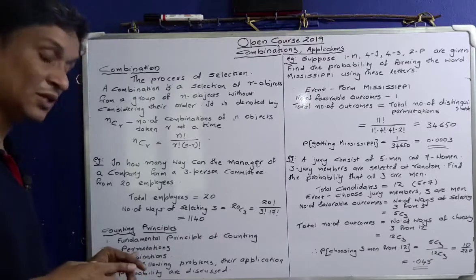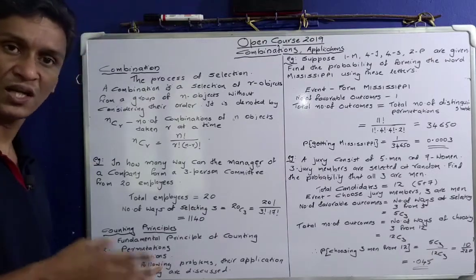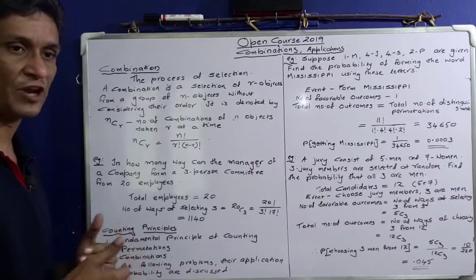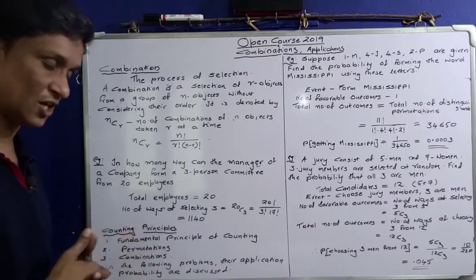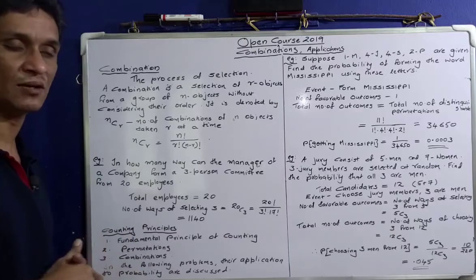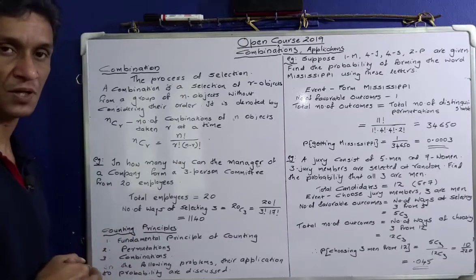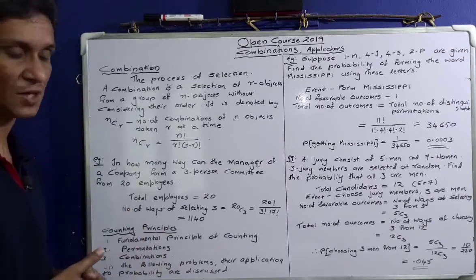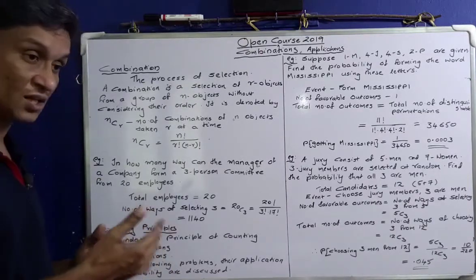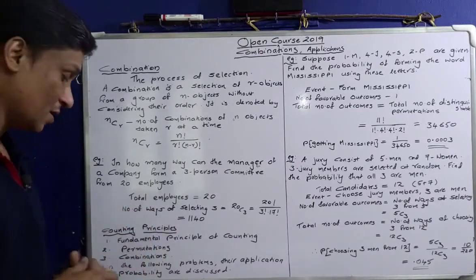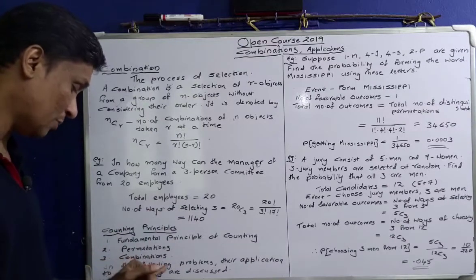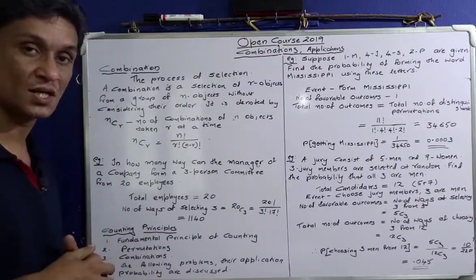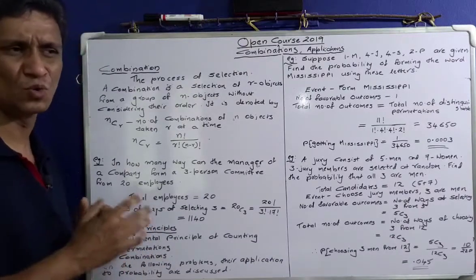In the previous video it was permutation — the number of ways of arranging. That is the counting principle. Now the third thing is combinations. We are going to discuss these three things: fundamental principle of counting, permutation, and combination.